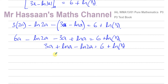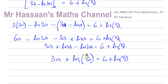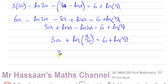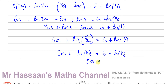When I combine these together: 3a plus ln(a over 2a) equals 6 plus ln(1/2). The a and the a cancel out, leaving us with ln(1/2). So I've got 3a plus ln(1/2) equals 6 plus ln(1/2). We can subtract ln(1/2) from both sides, giving 3a equals 6, so a is equal to 2.